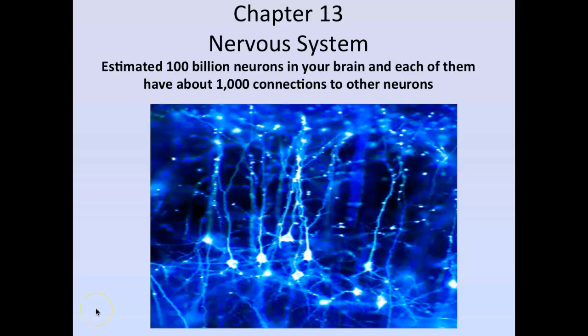This is chapter 13's neural tissue, or the nervous system overview lecture. So it's chapter 13's outline — hopefully you have that in front of you. There's an estimated 100 billion neurons in your brain, and each of them have about 1,000 connections to other neurons. That's something I heard on NPR when I was driving — they were talking to a neurobiologist — and I remember that because it's such a mind-blowing figure.